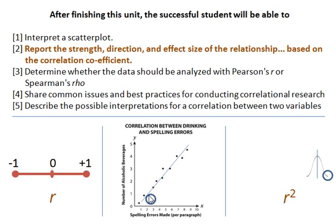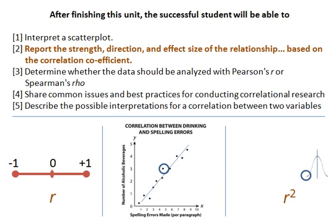Now what if instead I allow you to use the correlational information — I'll actually tell you the number of alcoholic beverages consumed by that person. Now you get to use this best fitting line. You'll notice much fewer errors are going to be made here, but some errors will still be made. You'll use the best fitting line and the person may have made more spelling errors than you would have thought, or they'll be right on, or the person will actually have made fewer spelling errors than you would have thought. So there's still some error, but less.